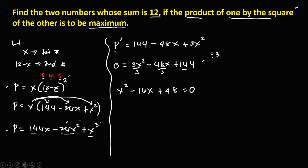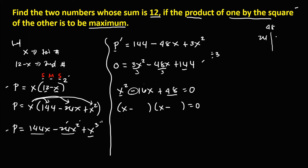Since this is a quadratic equation, we use factoring. The factors for x squared are x times x. Since the middle term is negative, both signs are negative. We need factors of 48 that add up to 16. Checking: 24 times 2 is 48 (sum 26), 16 times 3 is 48 (sum 19), 12 times 4 is 48 (sum 16). So the factors are 12 and 4.